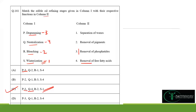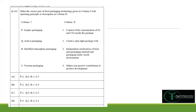Moving to the next question on packaging types: Column 1 has aseptic packaging, active packaging, modified atmosphere packaging, and vacuum packaging. Controlling the concentration of oxygen and CO₂ inside the package corresponds to modified atmosphere packaging, so R matches option 1.